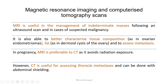MRI is only performed when the mass is indeterminate or malignancy is suspected, to better characterize tissue composition, fat, and assess for ascites. In pregnancy, MRI is preferable to CT to avoid radiation exposure. However, CT is useful for assessing thoracic metastasis and can be done with abdominal shielding.